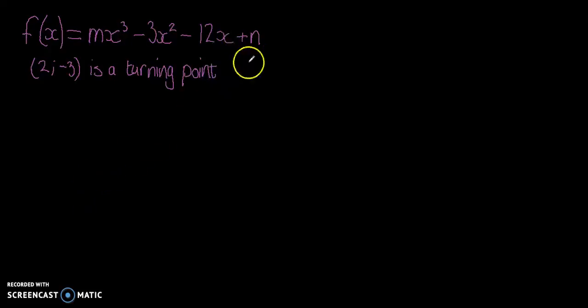Well hello there lovely one. In this question we need to find the equation of a cubic function and we're given the general equation, and we're shown that m and n are the values that are missing. We're also told that (2, -3) is the turning point.